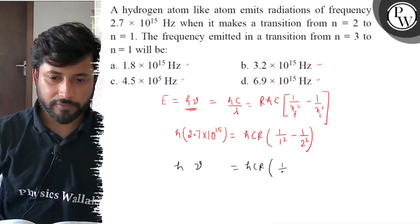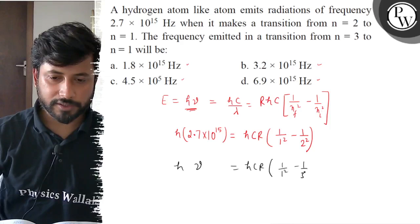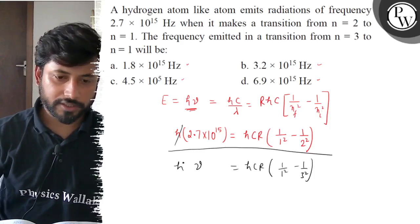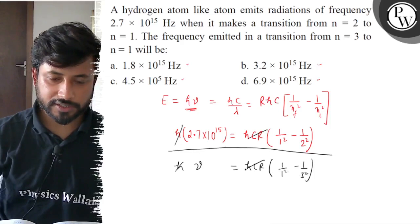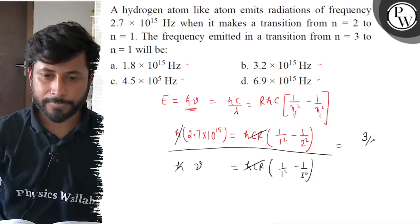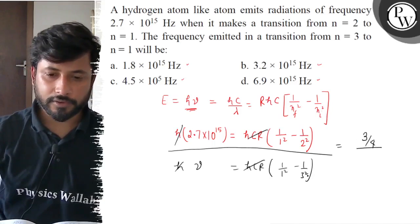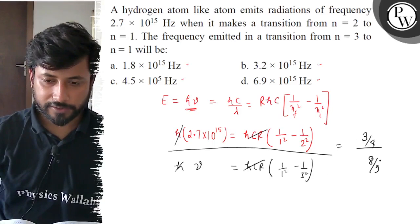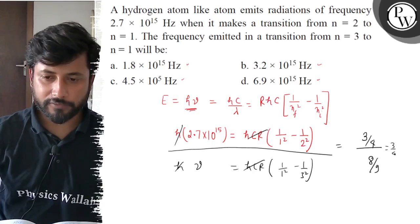For the second case, Hc times R times 1 by 1 square minus 1 by 3 square. Now we take this ratio. So Hc cancels. 1 minus 1 by 4, which is 3 by 4. 1 minus 1 by 9, which is 8 by 9. So 3 by 4 into 9 by 8, which is 27 divided by 32.